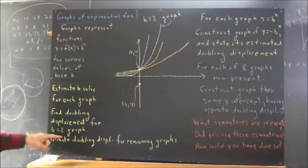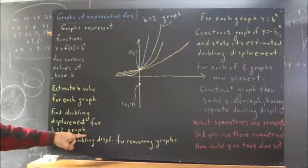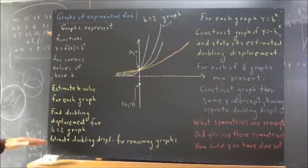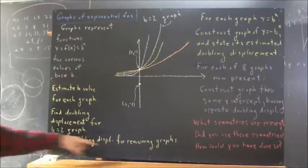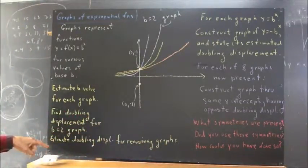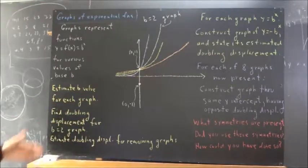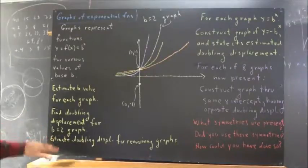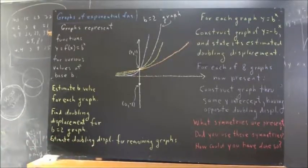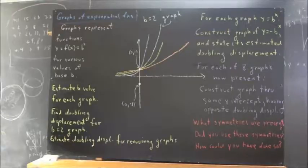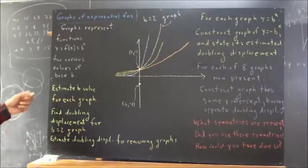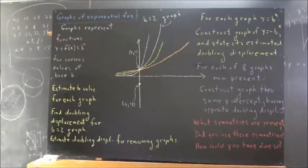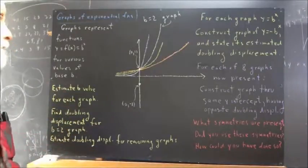Then, having figured this out, you can actually scale this graph. And you can use that scale to estimate the doubling displacement for the remaining graphs. You don't absolutely have to scale it. Once you know what the doubling displacement is for this, you can graphically see what the doubling displacement is for each of the remaining graphs and just compare it. So, we can do these things.